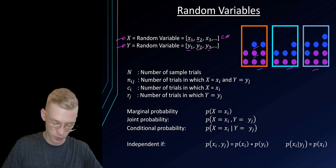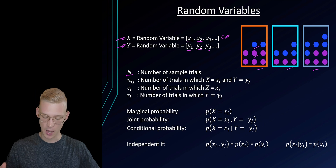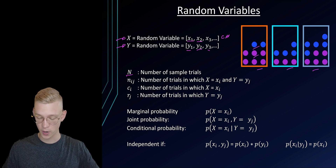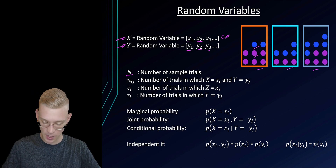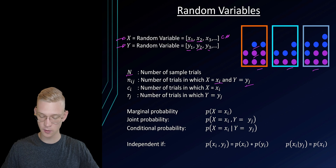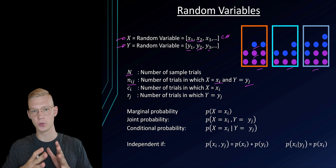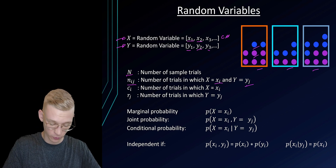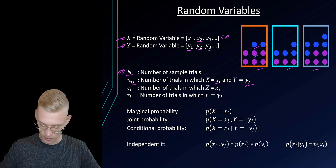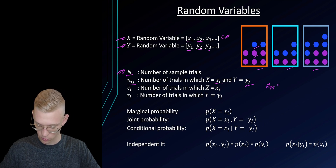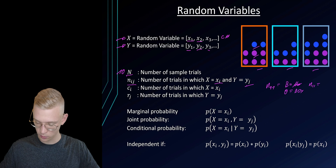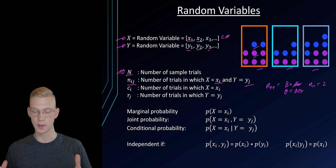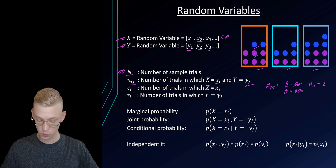If we now perform our experiment multiple times, we can count how many times a random marble from a random box has, for example, specifically the color blue and was taken from the orange box. So if we sort our results, we performed the experiment 10 times. If n11 corresponds to a blue marble from the orange box, we can say that n11 was equal to two. So two of those ten times we had x1 and y1.